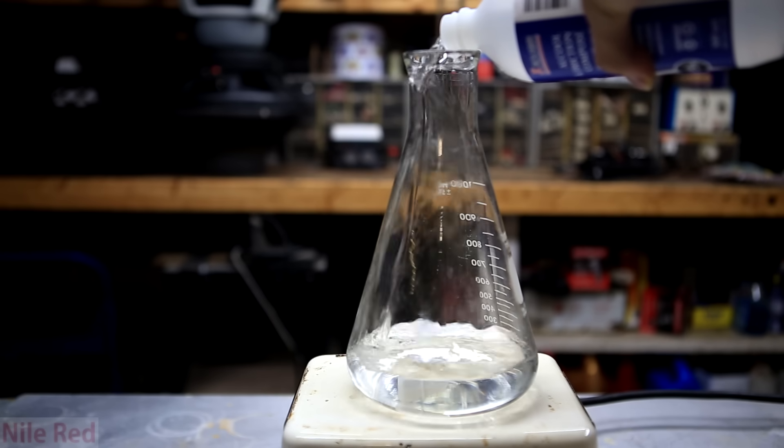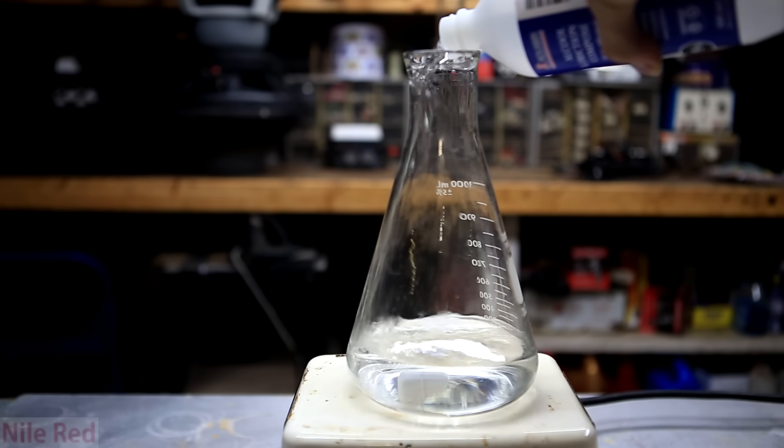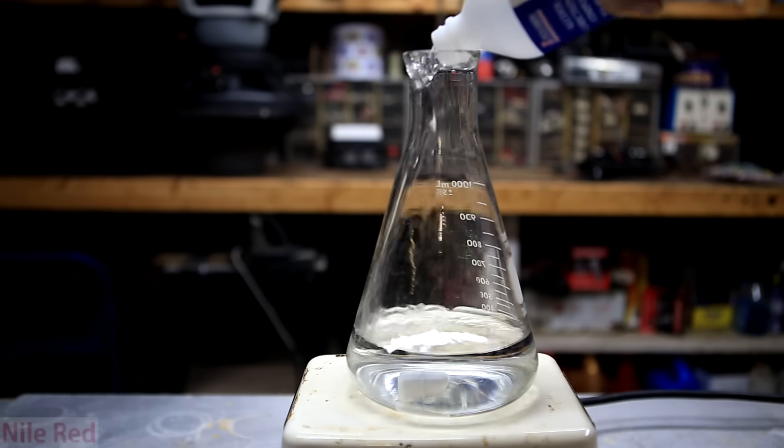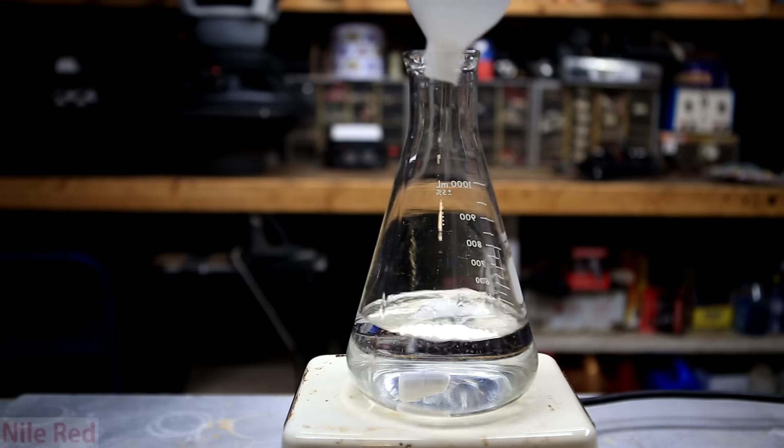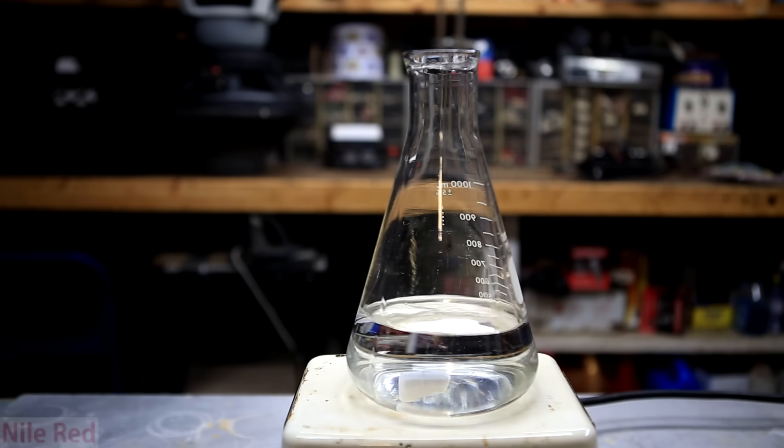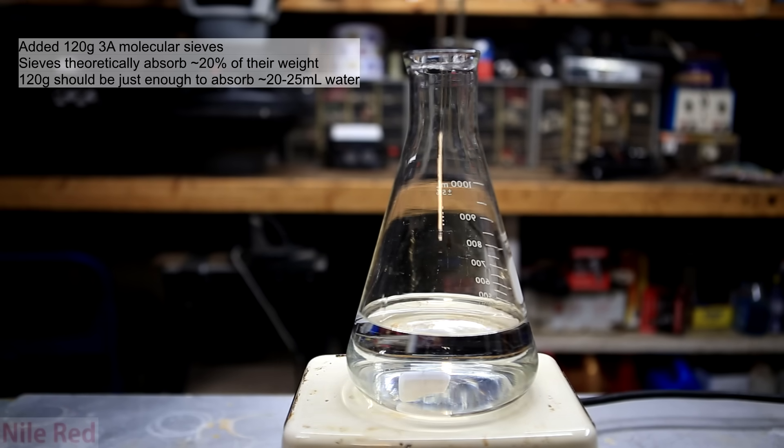It's first added to a large container. I have a stir bar at the bottom, but it's kind of pointless because once enough drying agent is added, there really won't be much stirring happening. And once all the ethanol is added, we can start adding our drying agent.